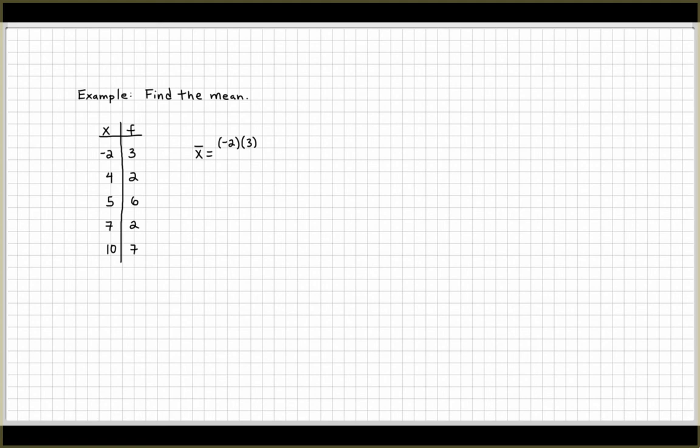So you have negative 2 times 3, or you have 3 observations of negative 2. All right, so we're going to add that to our next pair of data here. We have observation of 4 and it seems like it occurs 2 times.